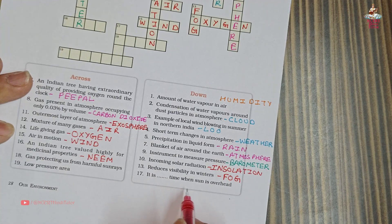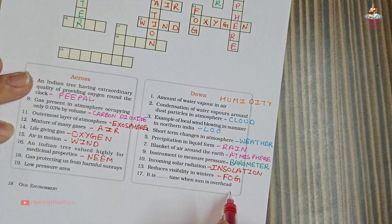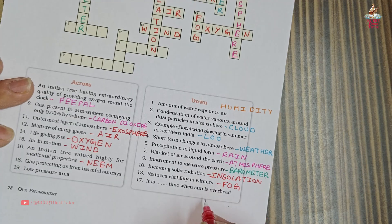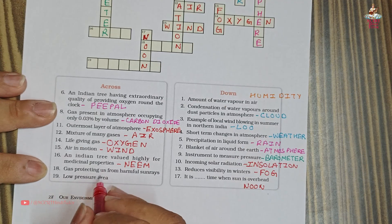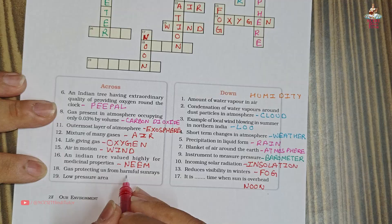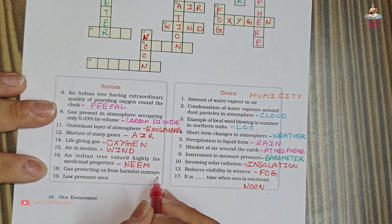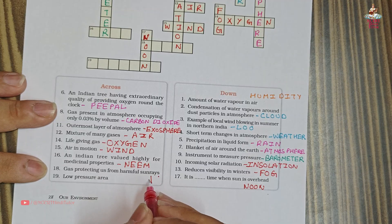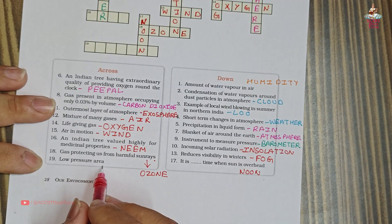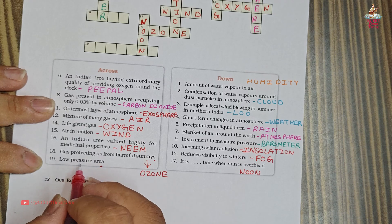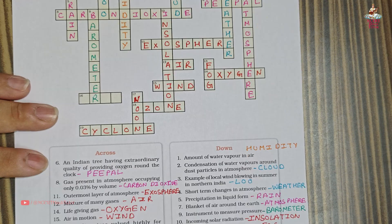Seventeenth clue: it is daytime when sun is overhead. Answer: Noon. Eighteenth clue: gas protecting us from harmful sun rays. Answer: Ozone. Nineteenth clue: low pressure area. Answer: Cyclone.